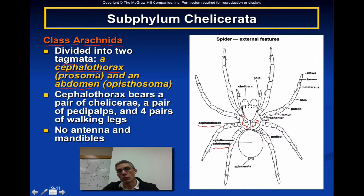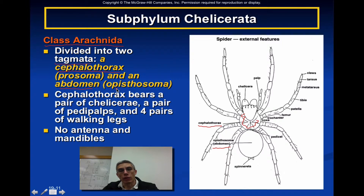Sometimes we give special names to each of these areas. If you're talking about a cephalothorax, you might see it referred to as a prosoma, and if you're talking about the abdomen, you might see it referred to as the opisthosoma.